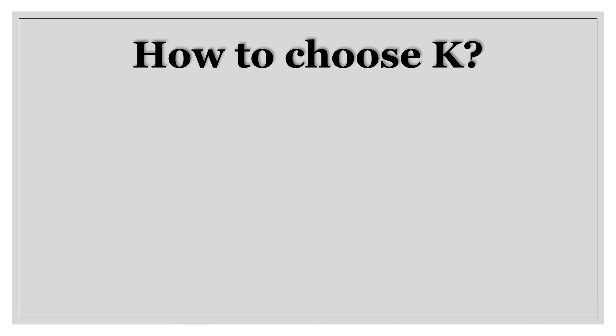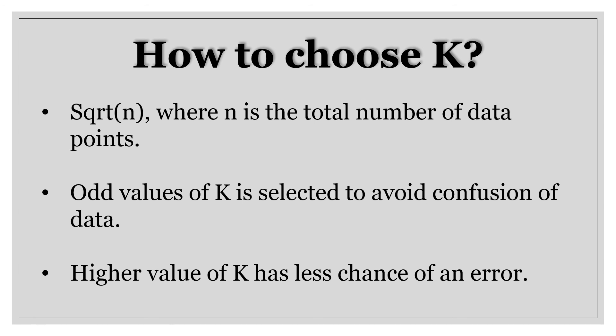We have seen examples of classification and regression using KNN. Now let us see how to calculate the value of K. K will be equal to the square root of N, where N is the total number of data points. You should always remember that the value of K should be an odd value — this is done in order to avoid confusion. For example, if I had chosen K equal to 6 in the classification example, and the 6 nearest neighbors were 3 yellow and 3 green, it would have been very difficult to classify my unknown data point because similarity would be equal in both cases. Hence, it is always advised to use an odd value for K. The higher the value of K, the lesser the chances of an error.